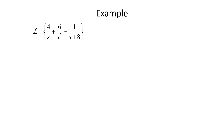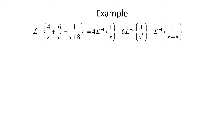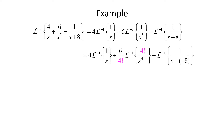Let's look at a second example: the inverse Laplace transform of 4/s + 6/s⁵ − 1/(s+8). Since the inverse Laplace transform is linear, we can look at this term by term: 4 times the inverse Laplace of 1/s, plus 6 times the inverse Laplace of 1/s⁵, minus the inverse Laplace of 1/(s+8). The first term, 1/s, already matches our first formula.